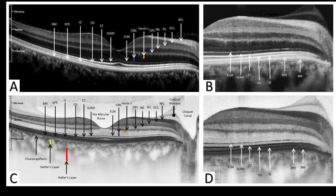After the outer nuclear layer, the first reflective line is the external limiting membrane, then the inner segment myoid zone, then the ellipsoid zone as a very reflective layer, then the outer segments, then the interdigitating zone, then the RPE, and then Bruch's membrane. In higher resolution in panel B, we see the external limiting membrane, inner segment myoid zone, ellipsoid zone, outer segments, interdigitating zone, the RPE, and Bruch's membrane.